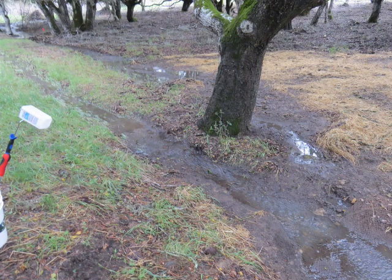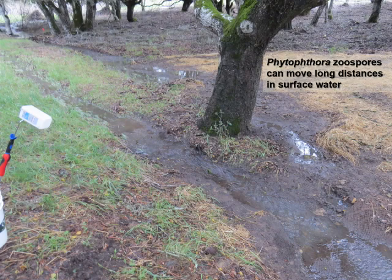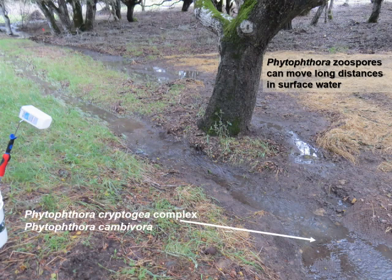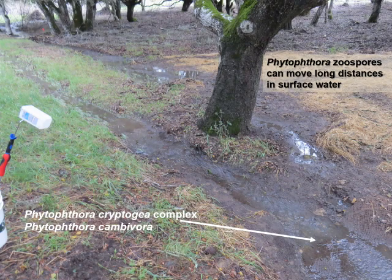We have surface runoff like we see in this ditch following rain, or in larger bodies of water, where zoospores of Phytophthora could move long distances. This is just a little bit of surface runoff that lasted for a short period of time, but we were able to sample it and find zoospores of Phytophthora cinnamomi and Cambivora using baiting — showing how easily, even a short duration of flooding, can move zoospores down great distances.